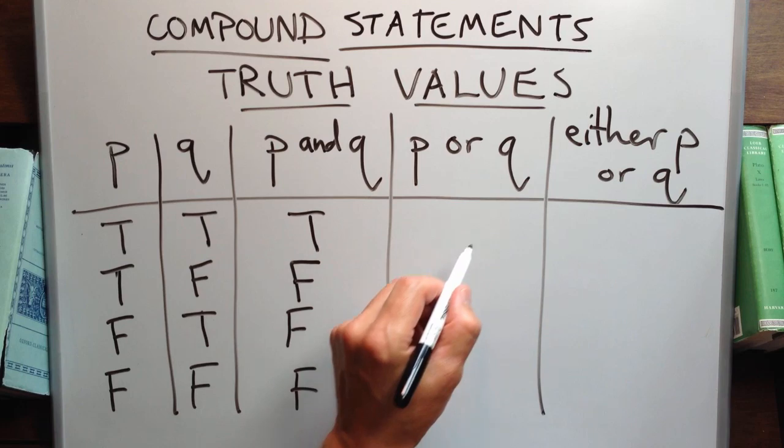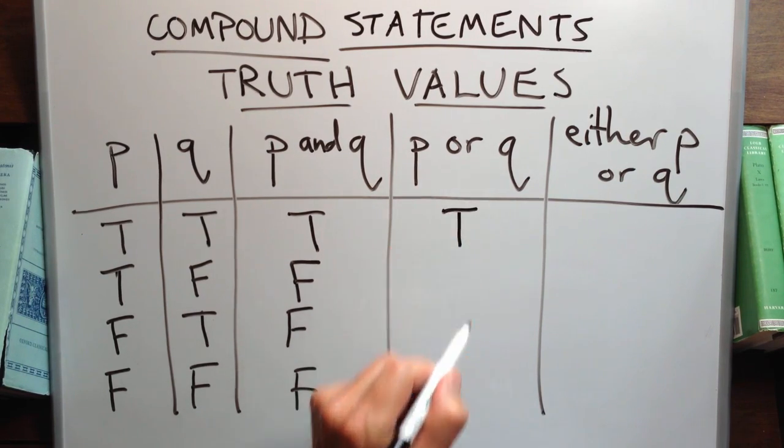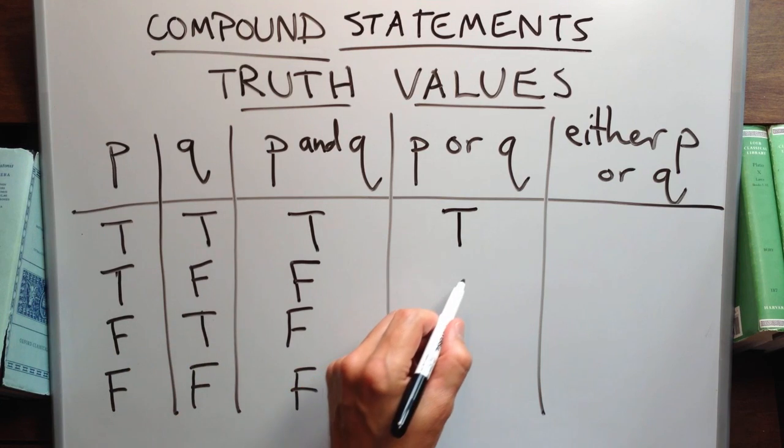If someone said, Amy is singing or Ted is dancing, and they both are, in fact, doing those activities, the claim is true.